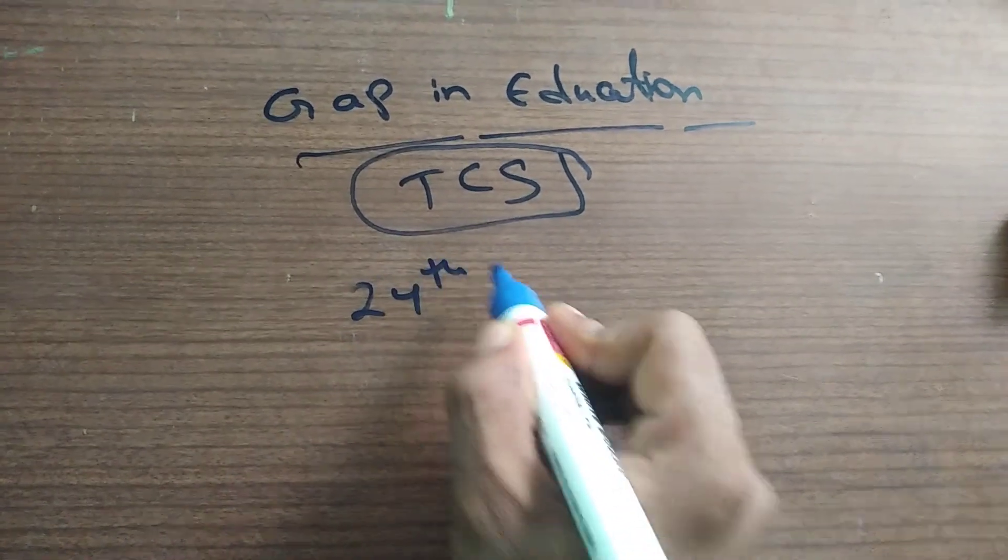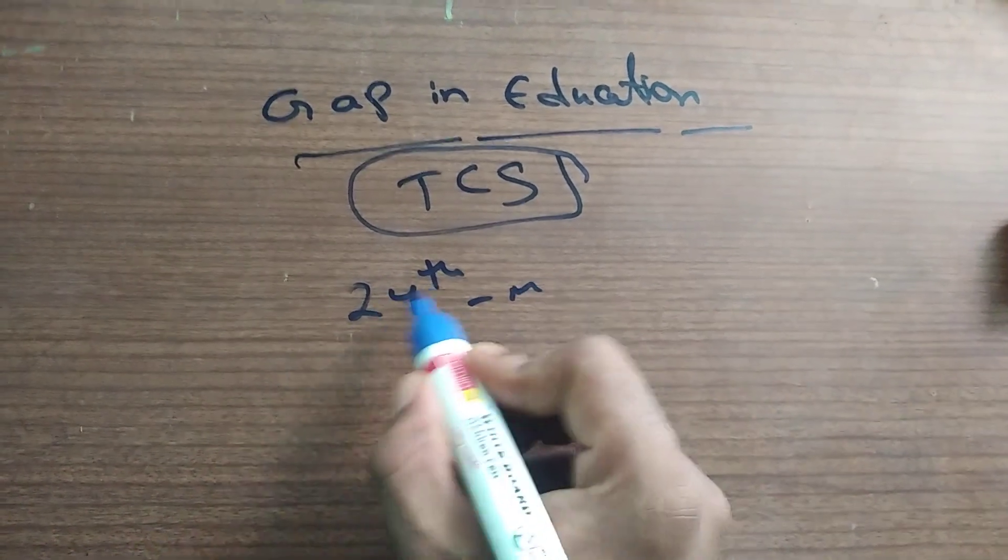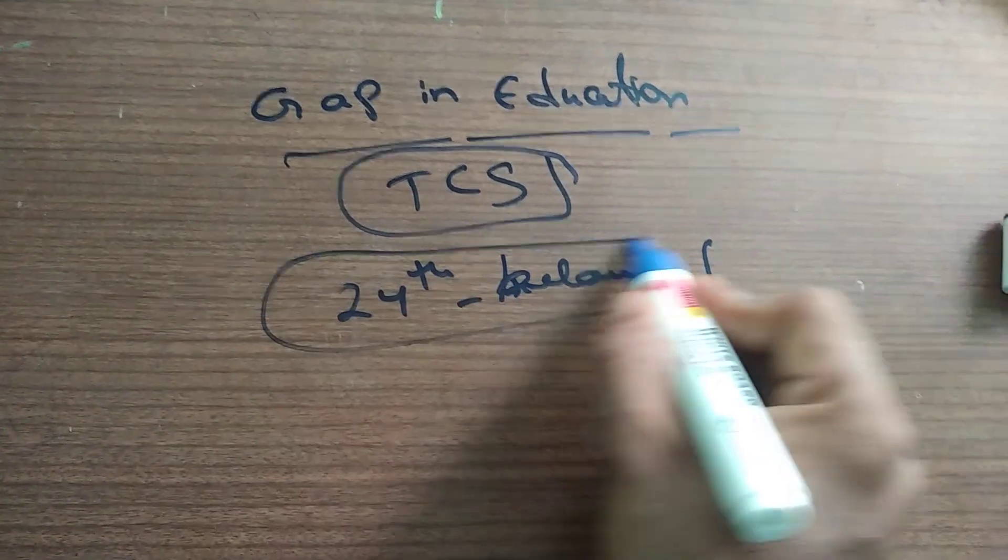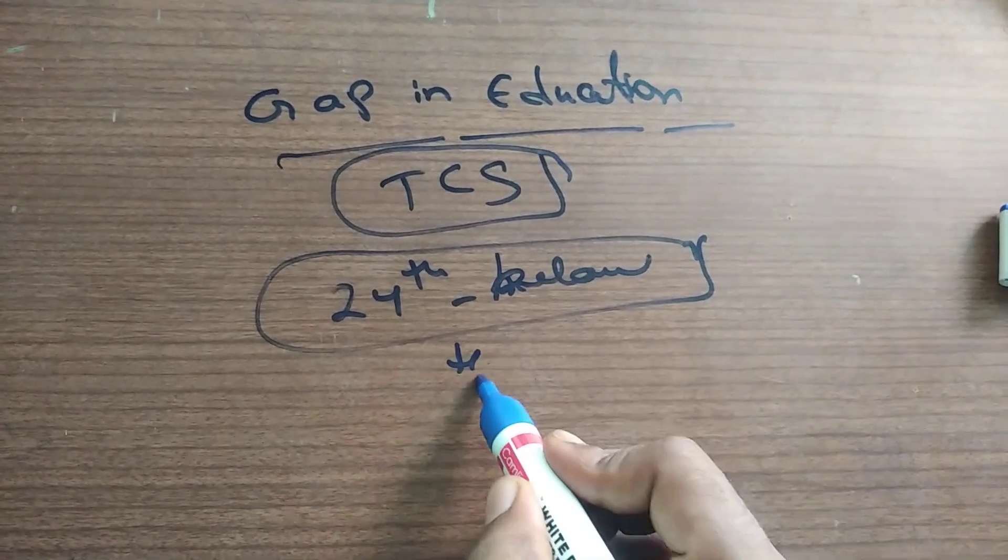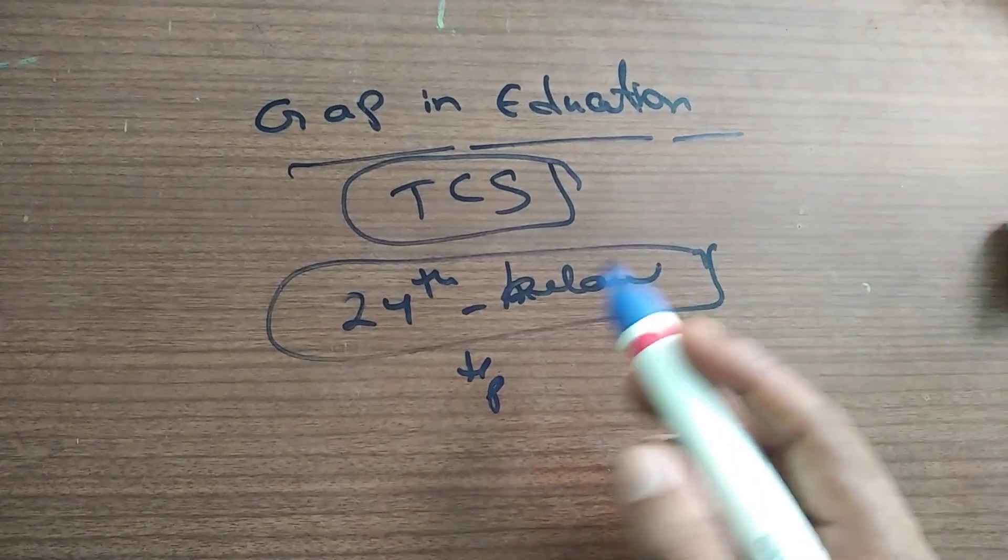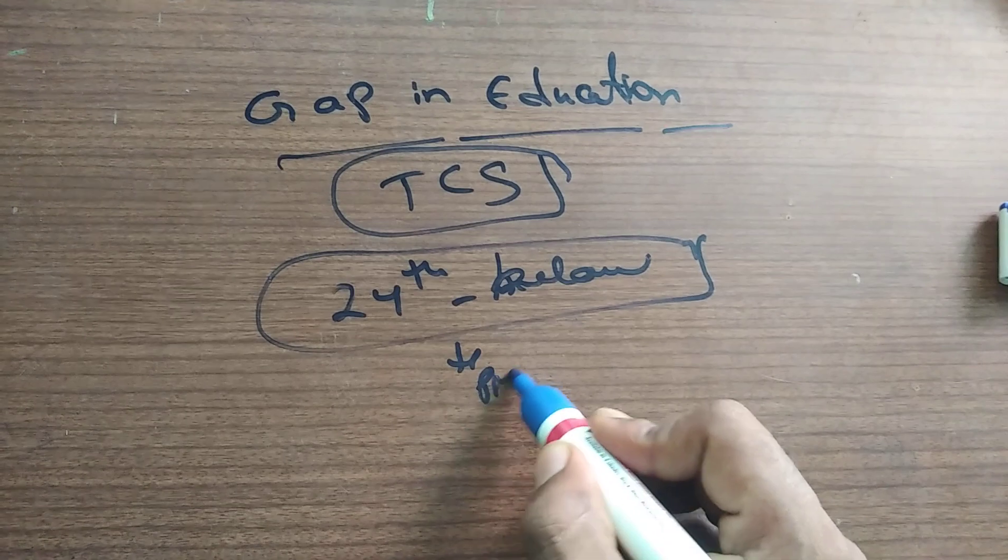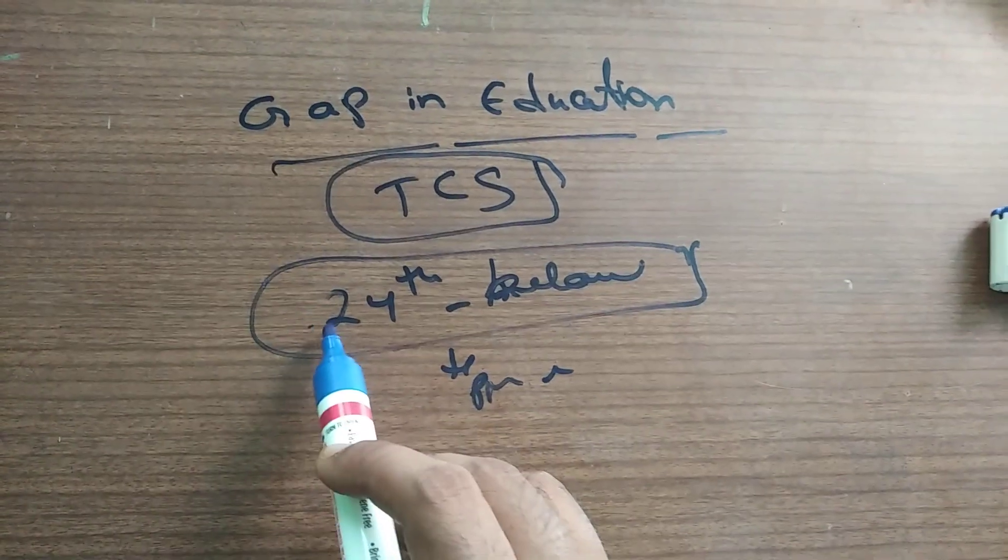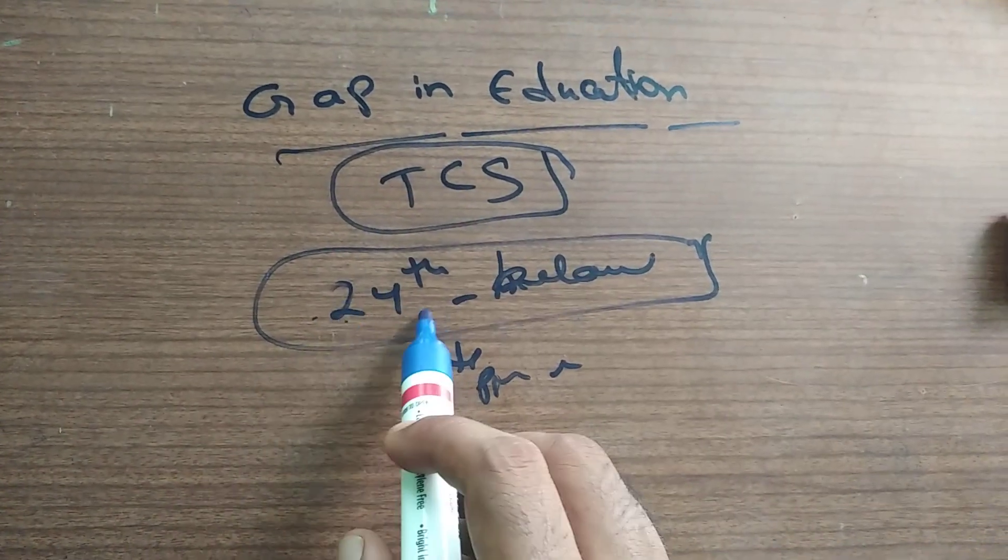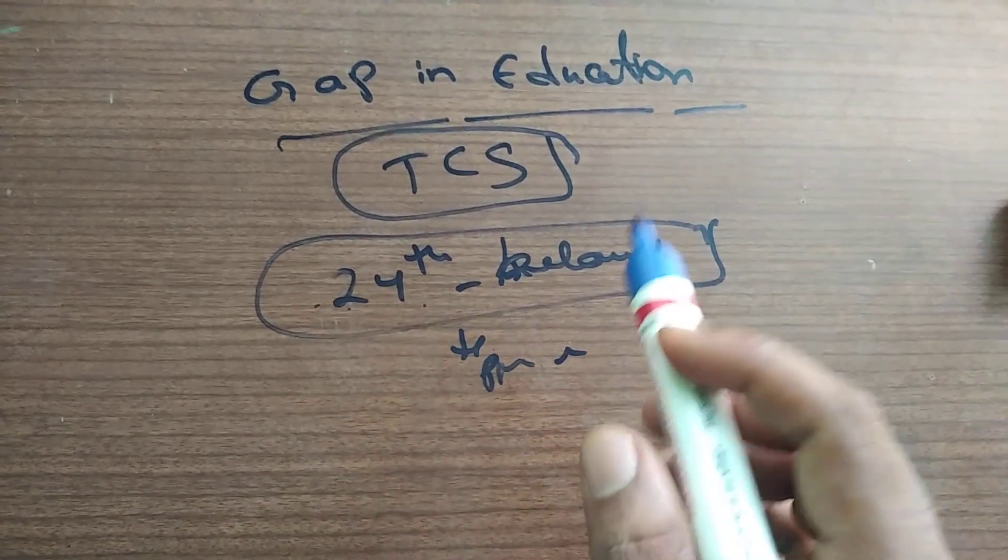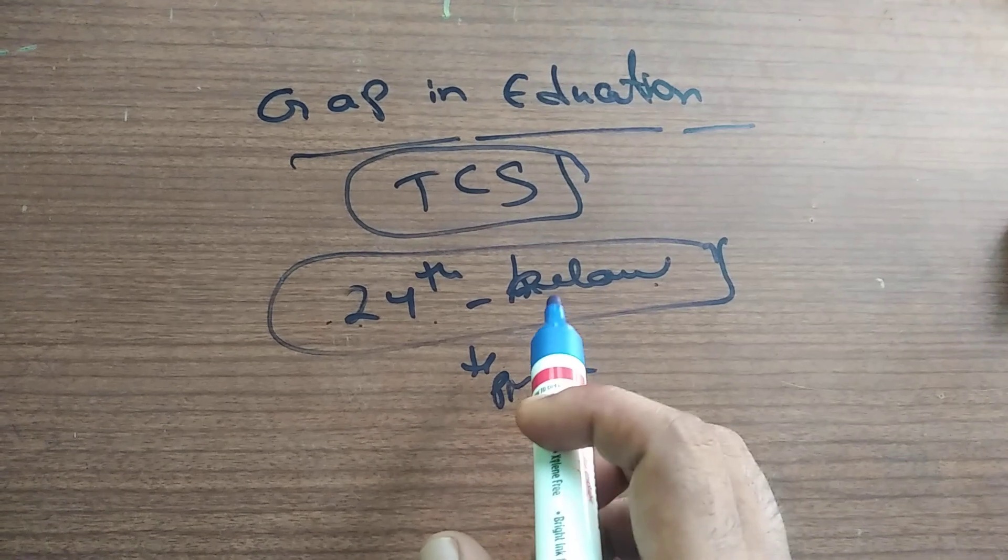Going to the topic, gap in education TCS. TCS accepts you if you have 24 months gap. It should be 24 months below. The gap is accepted in TCS if you provide proper certificate. If you have 24 months below gap, you should provide a proper medical certificate explaining what was the issue and why you had a gap.